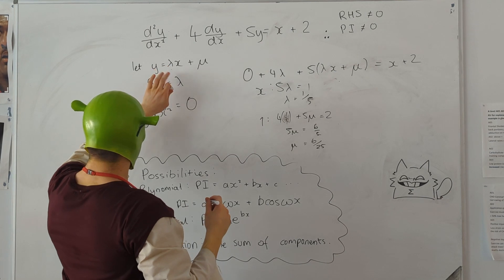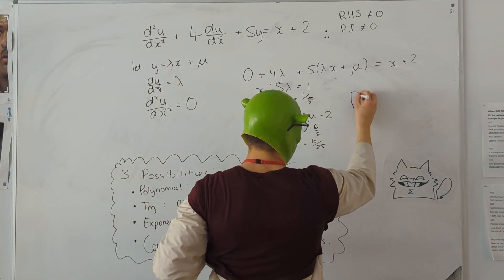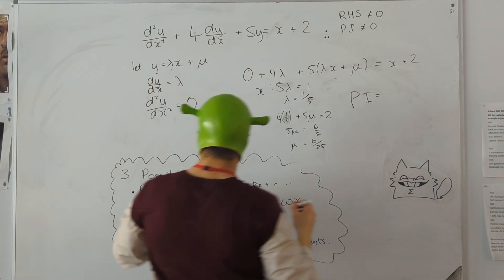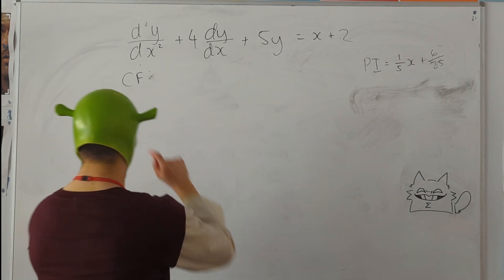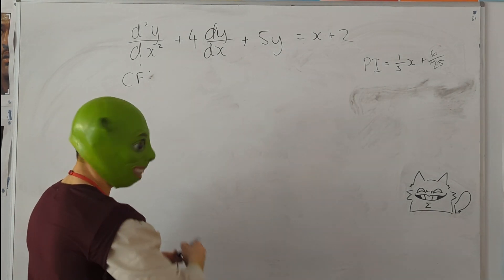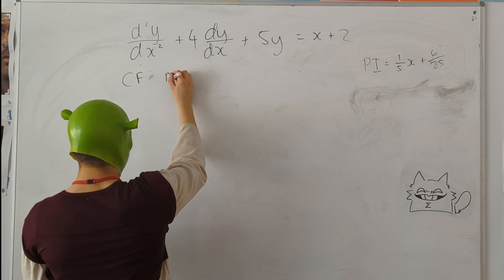And we can substitute that in to our original equation to find the particular integral. And now that we've found the particular integral, we can go ahead and find a complementary function. So just like last time, we do the auxiliary equation.